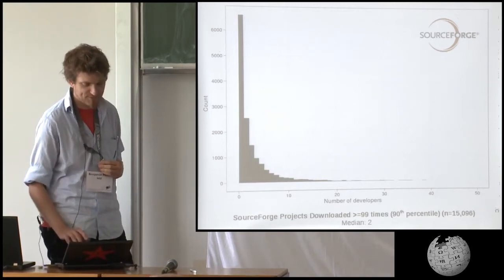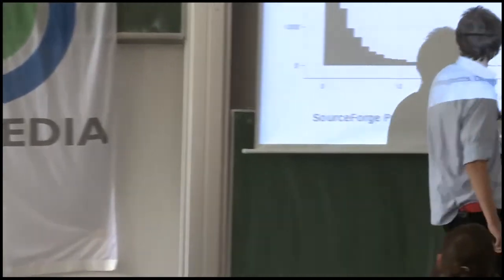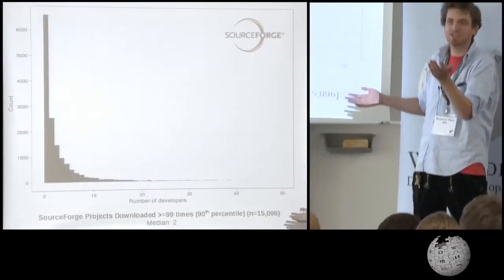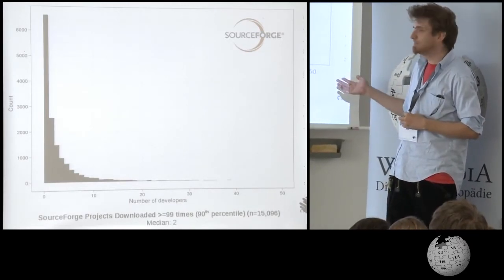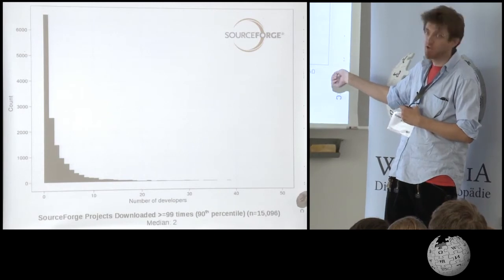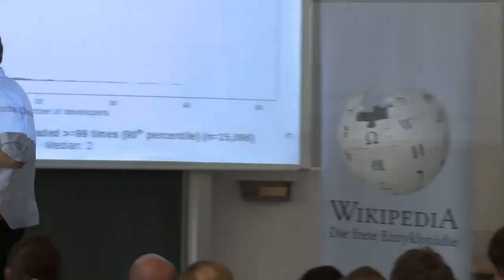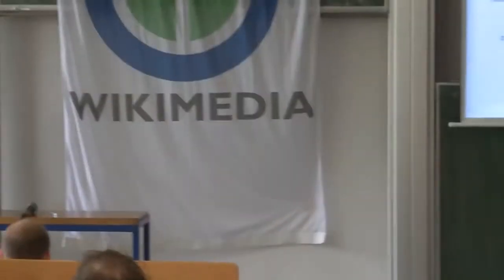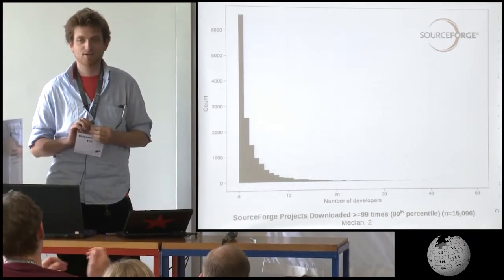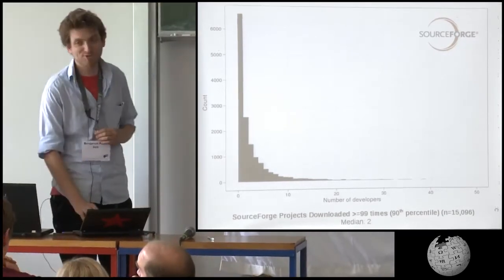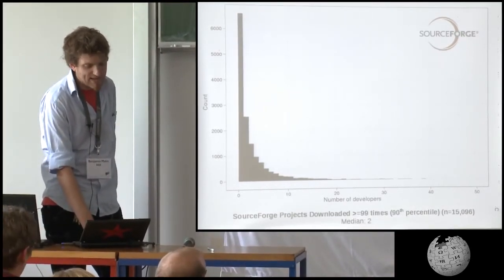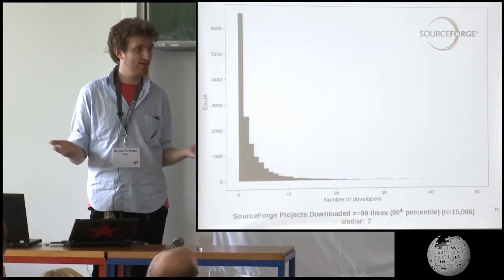The vast majority of what we know about free software is from way out on the tail. Nobody studies any of these projects — to the point where I can go to an audience of free software people and they're surprised by this. This is not people's intuition because it's not what we pay attention to — it isn't the software we use for the most part. What we know comes from way out on the tail: wikis with 25,000 contributors, or in the case of Wikipedia, hundreds of thousands of contributors. Almost everything we know about wikis is from studying Wikipedia.